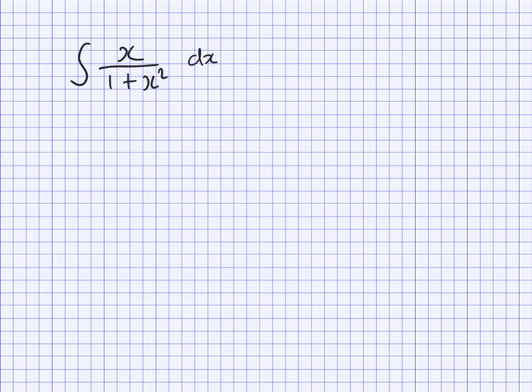So we've got the integral of x over 1 plus x squared. This we should be recognizing as a standard pattern. We can see that if we differentiate the 1 plus x squared, the denominator of this fraction, we would get 2x. 2x is strongly related to the top of the fraction x. It's a big clue. So we would probably want to consider using ln of 1 plus x squared as the thing that we're going to try to reverse differentiate.